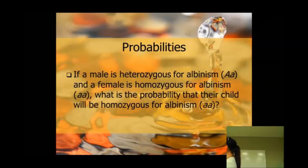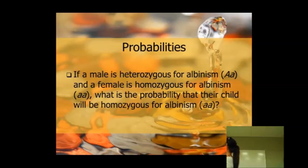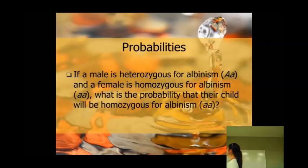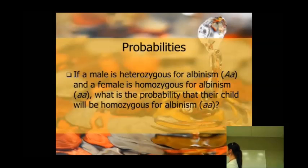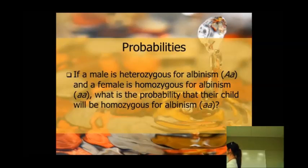So if you have a male that is heterozygous for albinism — big A, little a — and a female is homozygous for albinism, little a, little a.